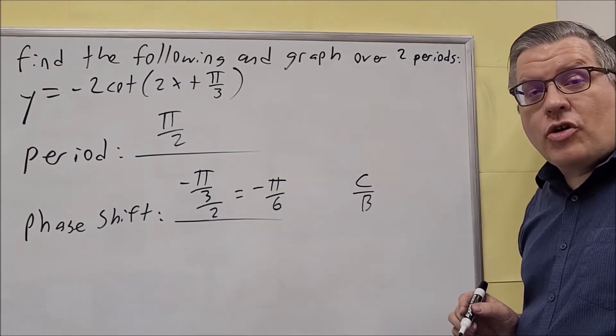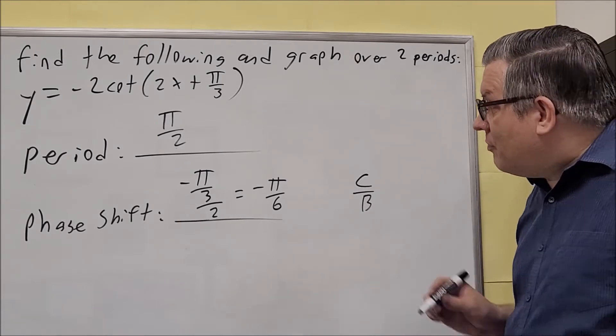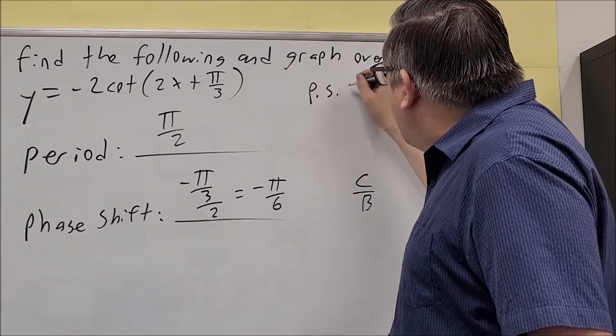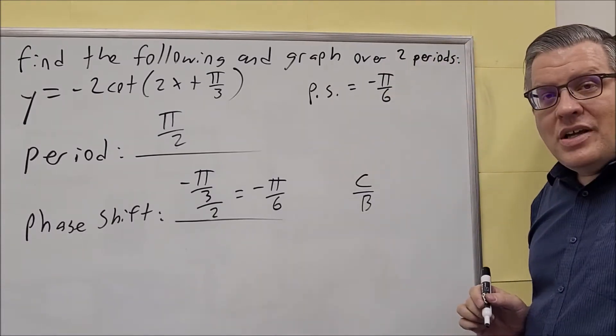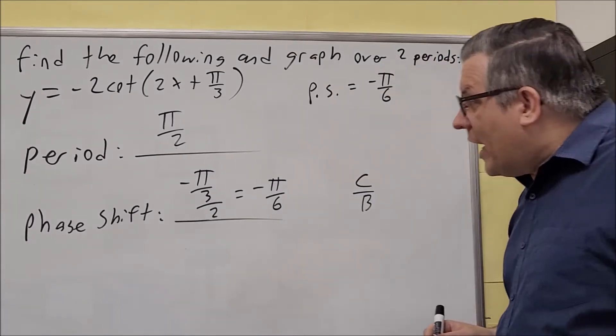The phase shift is always going to be your first key point that you have. So let's write that up here, phase shift is negative π over 6. Now to find the other ones, we have to find our half point.